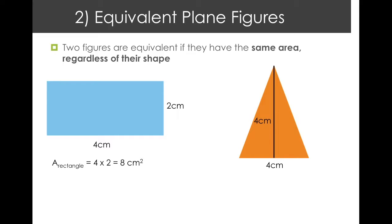When we're dealing with area, or any type of measurement of area, length, or volume, you should remember to put the units. So in this case, it's centimeters squared because it's area. And if we do the triangle, the area of a triangle is base times height divided by 2. So I have 4 times 4 divided by 2, which gives me 8 centimeters squared.